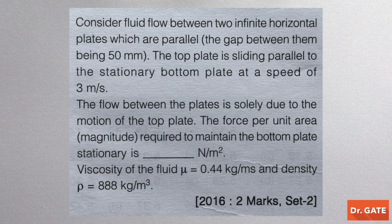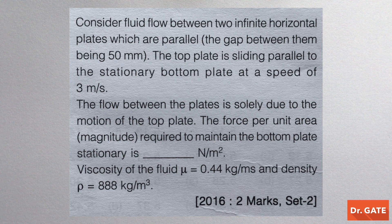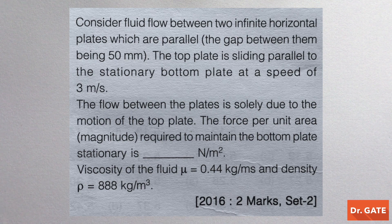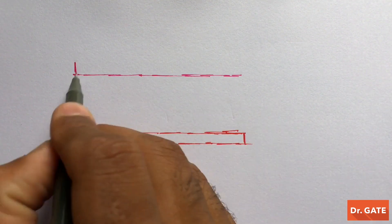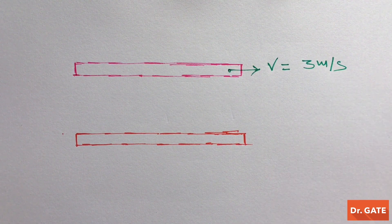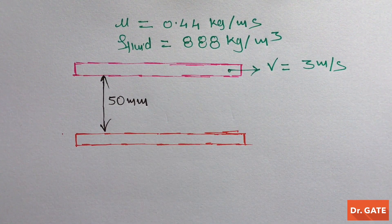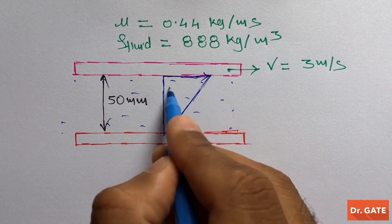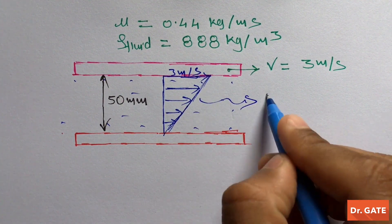Let's solve another question. Consider fluid flow between two infinite horizontal plates which are parallel and the gap between them is 50 mm. The top plate is sliding parallel to the stationary plate at a speed of 3 m/s. The flow between the plates is solely due to the motion of the top plate. The force per unit area required to maintain the bottom plate stationary is to be found. We are taking a linear velocity profile because nothing else is given.